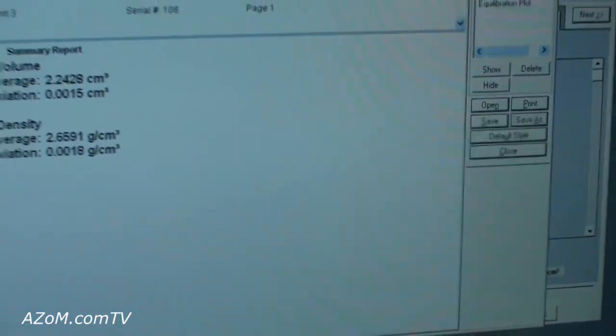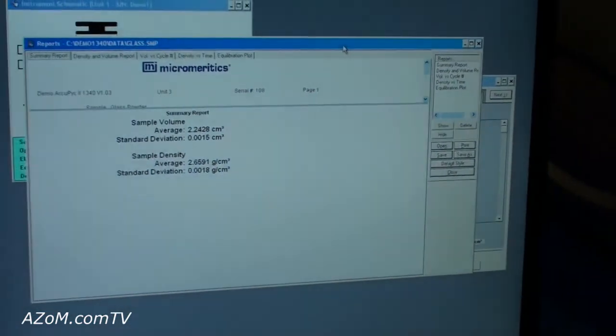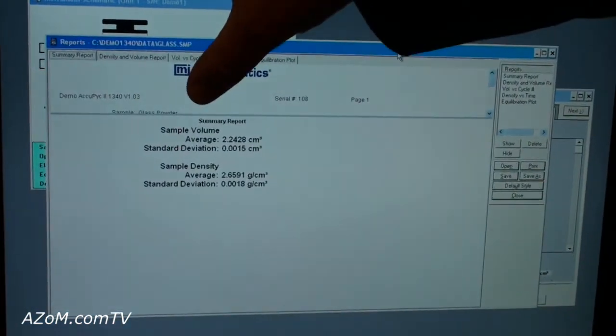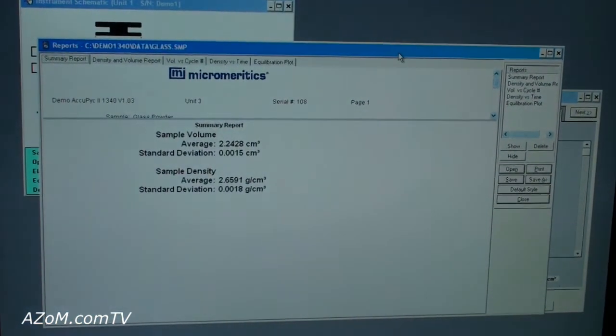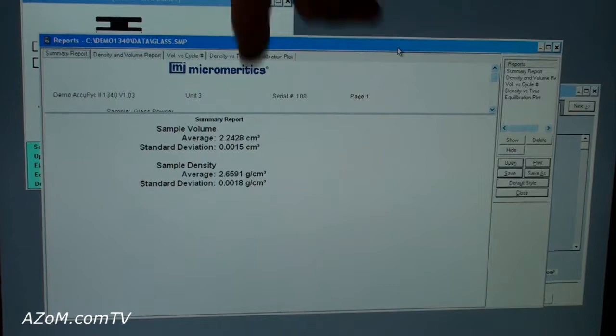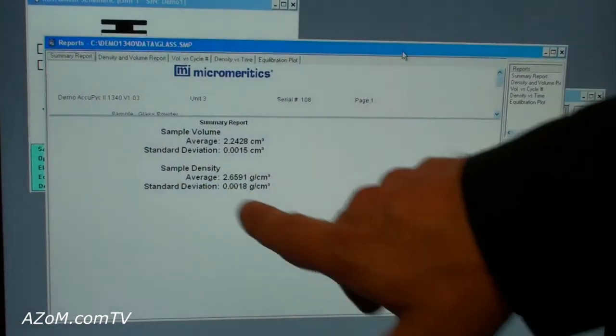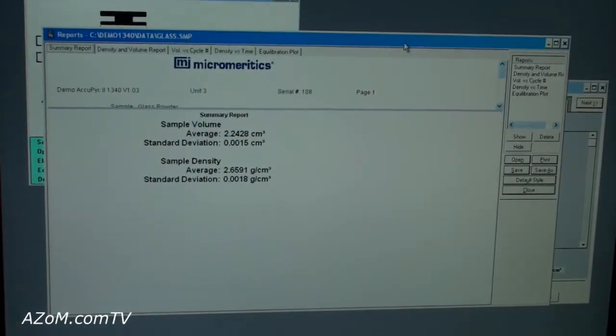In a generated result, this is what one could expect. Sample volume average from a number of tests and the standard deviation and the sample density average and standard deviation from a number of tests.